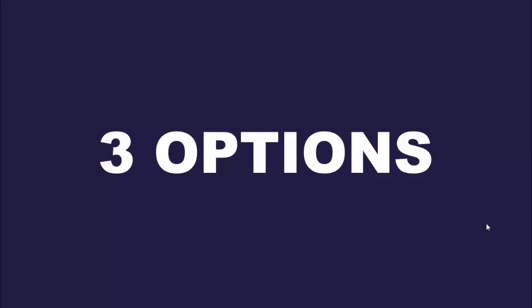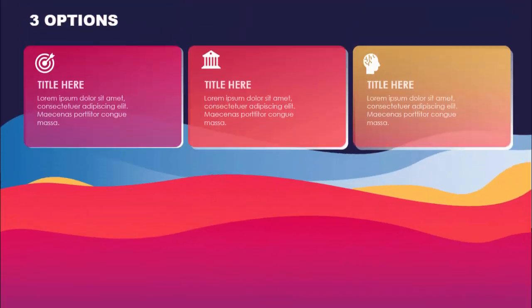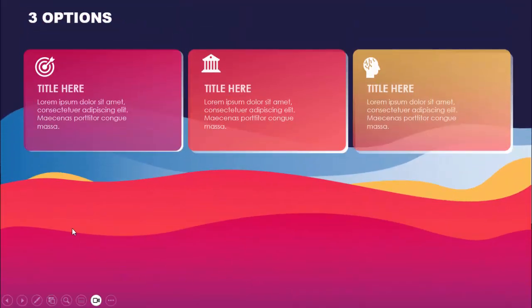In today's tutorial I'm going to show you how to create three gradient options infographics slide in PowerPoint. This is how the slide works — I have created gradient wave shapes and you can add three options with an icon, the title, and the detailed text. Depending on the requirement you can increase or decrease these options.